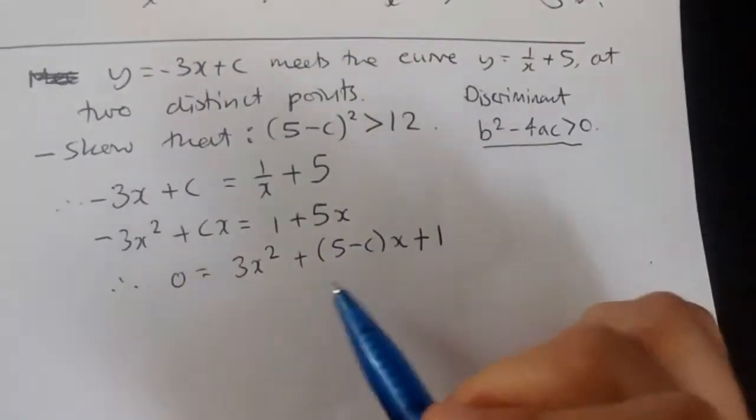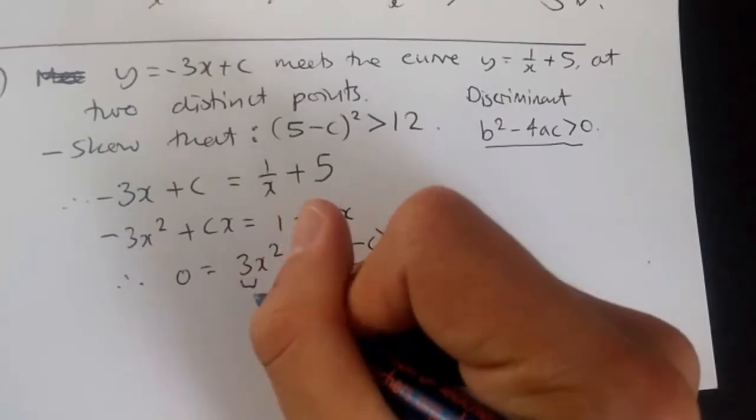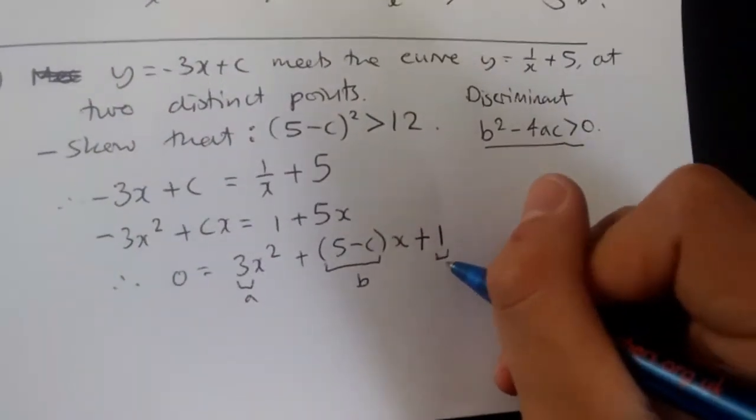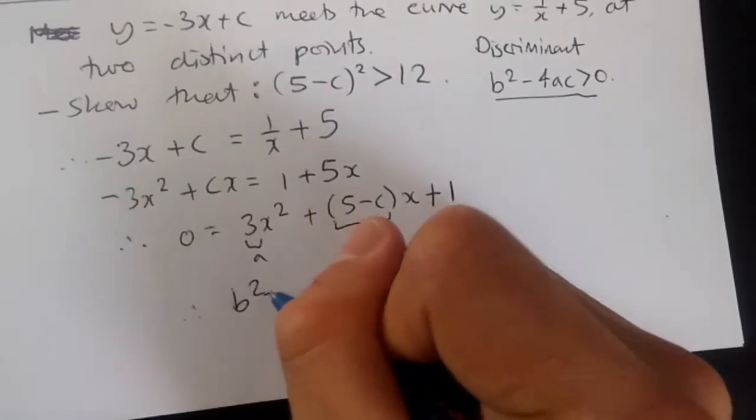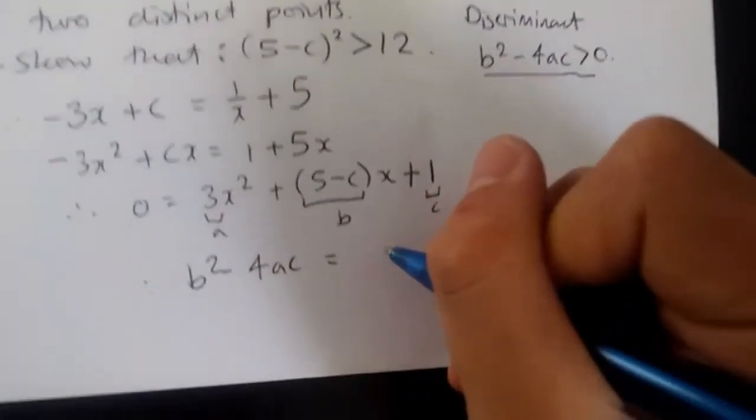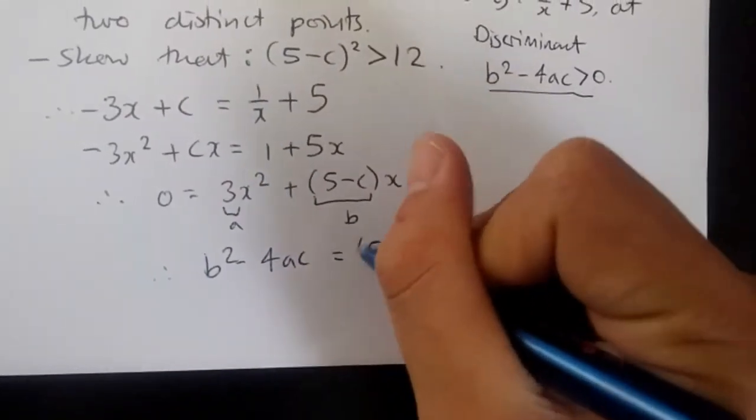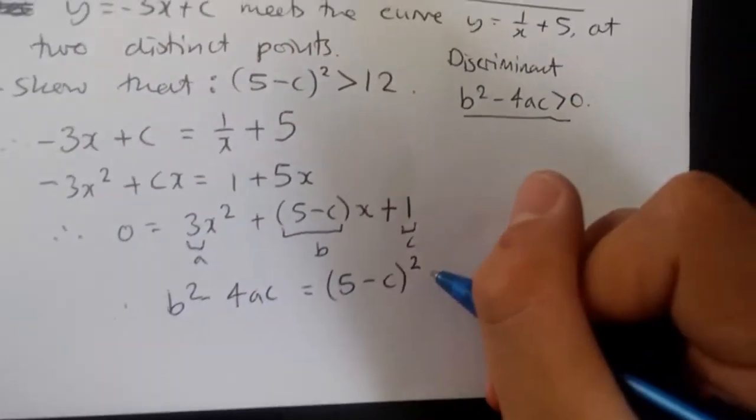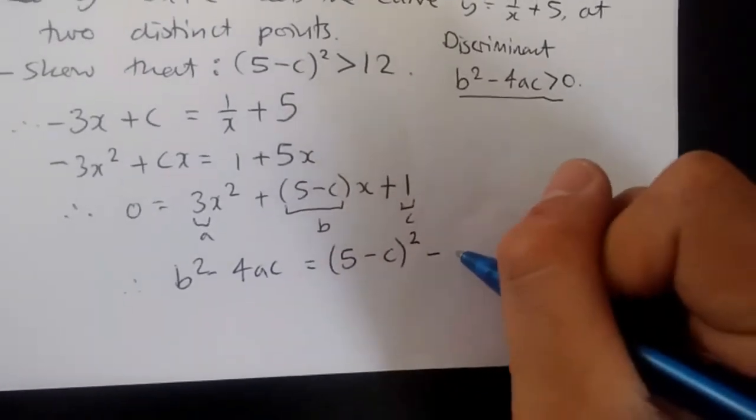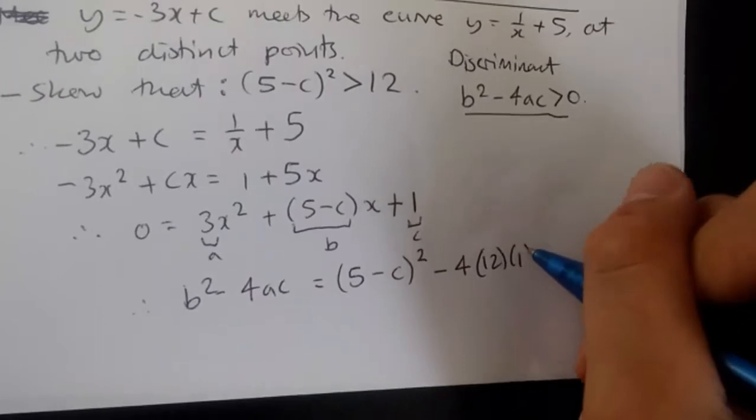Now, using the discriminant, calling this part your b, this 3 is your a, and 1 is your c. Therefore...